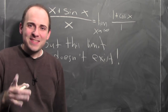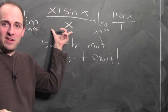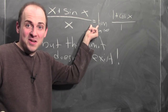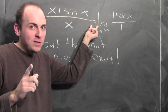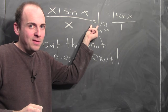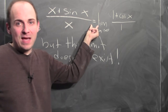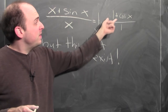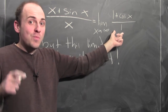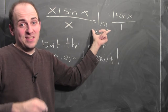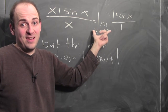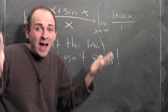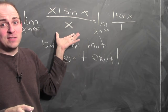Does that mean this limit doesn't exist? I wrote equals here, but remember I'm using L'Hopital's rule. What does L'Hopital's rule actually say? It says this limit is equal to the limit of the derivative over the derivative, provided that limit exists. And this limit doesn't exist in this case, so L'Hopital is silent as to the value of this limit.